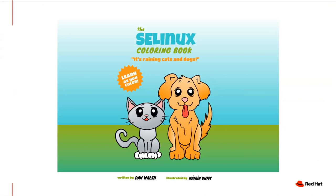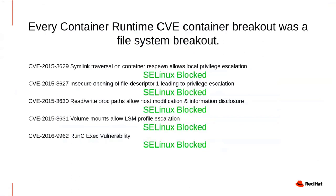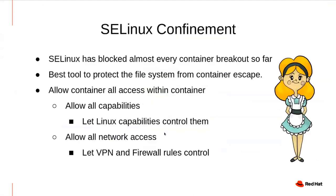Another way we enforce security is using SELinux, a tool we all know and love. SELinux is a security model based on type enforcement where files and processes have different types, and access is restricted based on what type you can access. In the past seven years, almost every CVE that has occurred has been filesystem breakouts — and SELinux has blocked each and every one of them. SELinux is the best tool to protect your filesystem from container escape. It's like the Goldilocks model — it gives you access to everything you need within your container, but when you try to break out, it is blocked completely on the host.